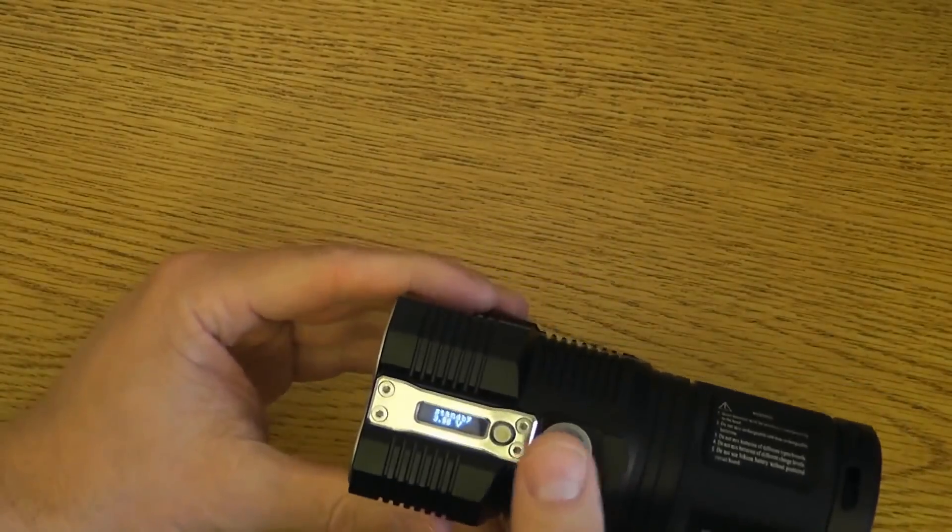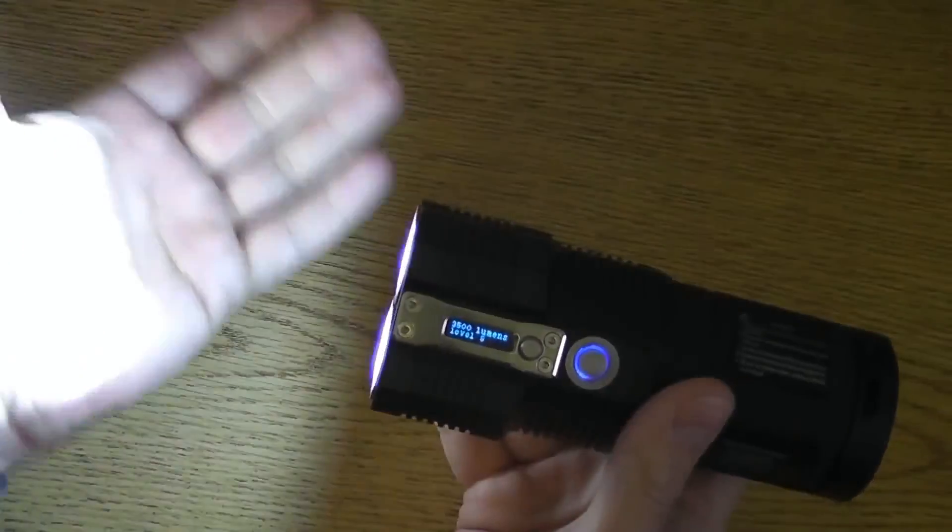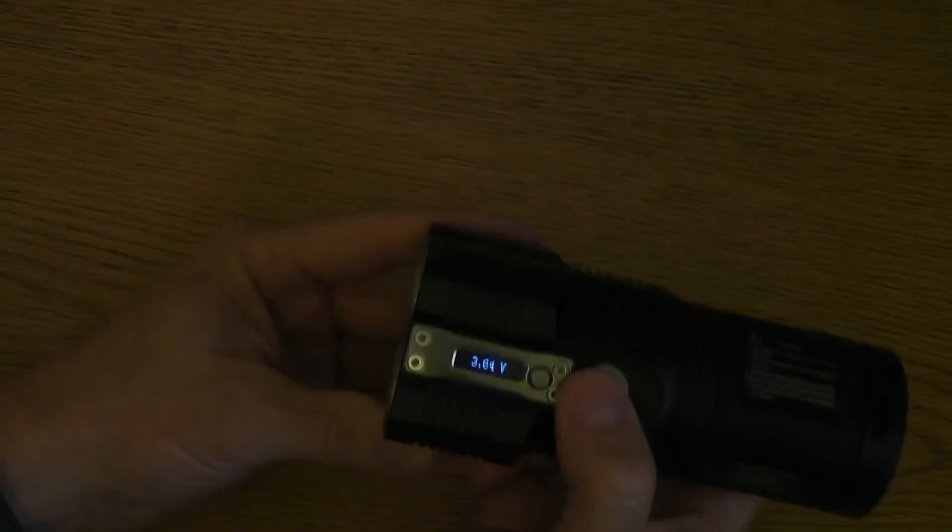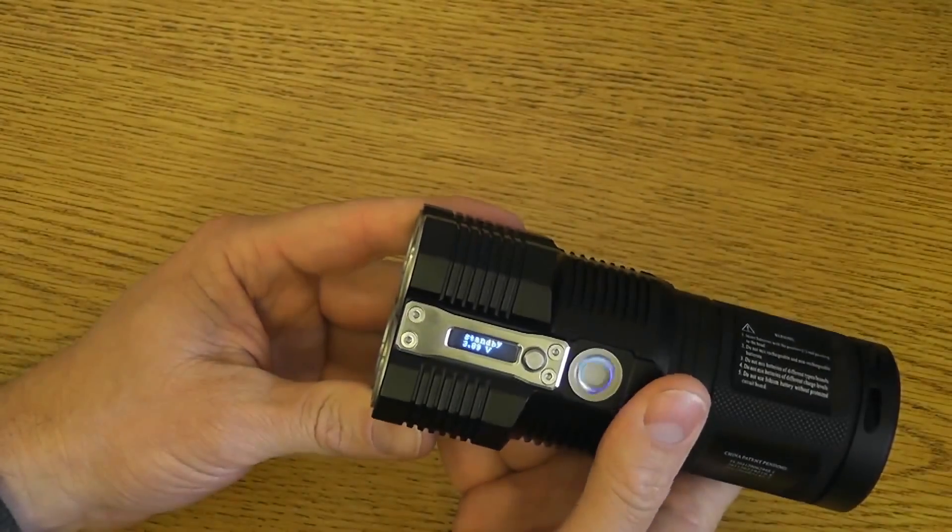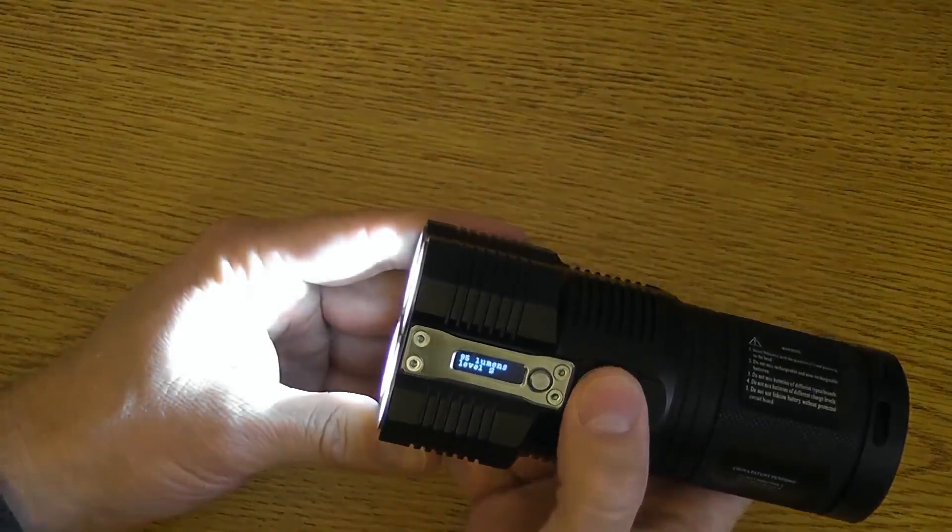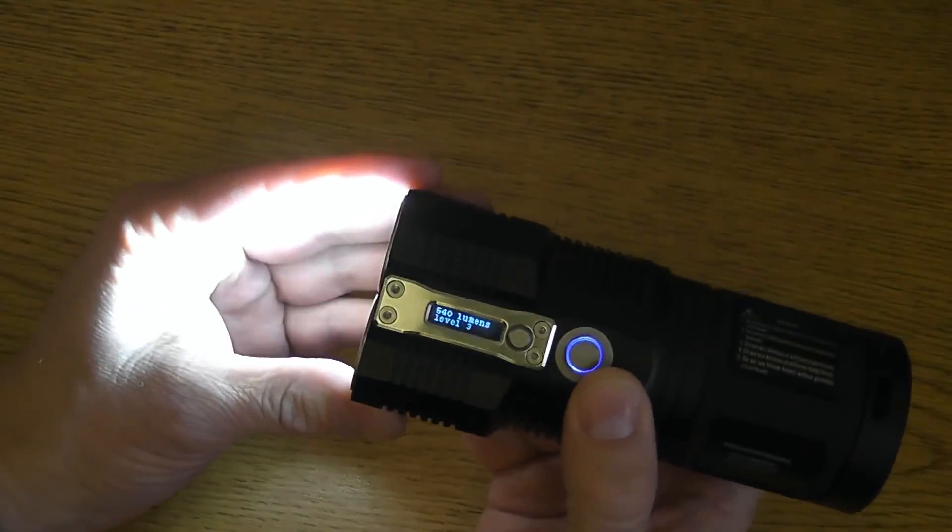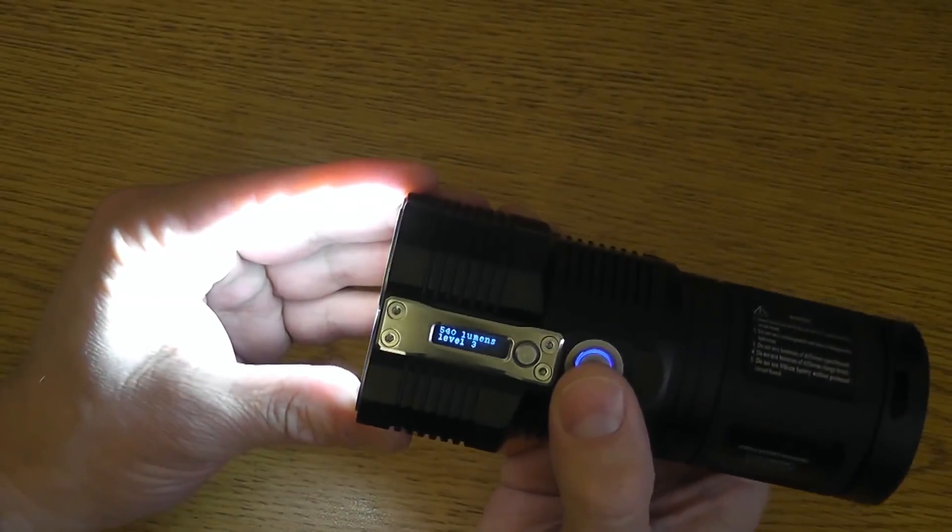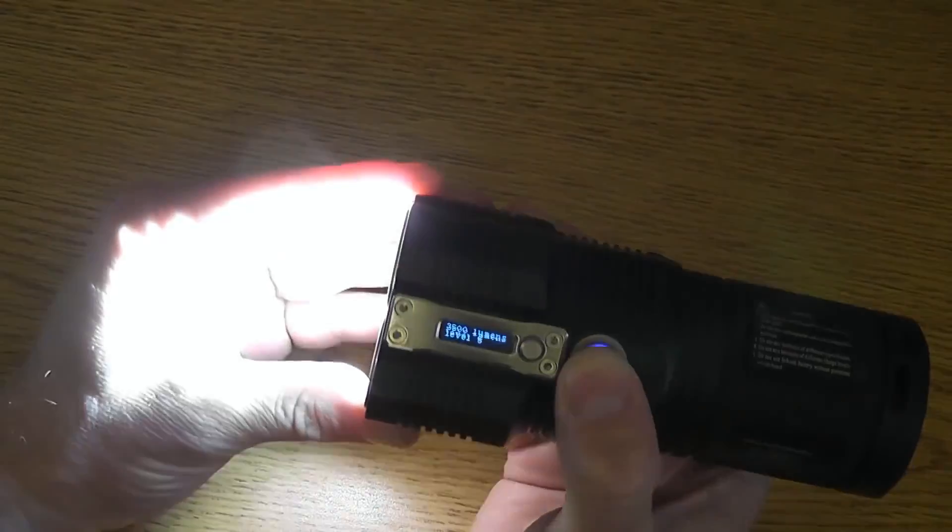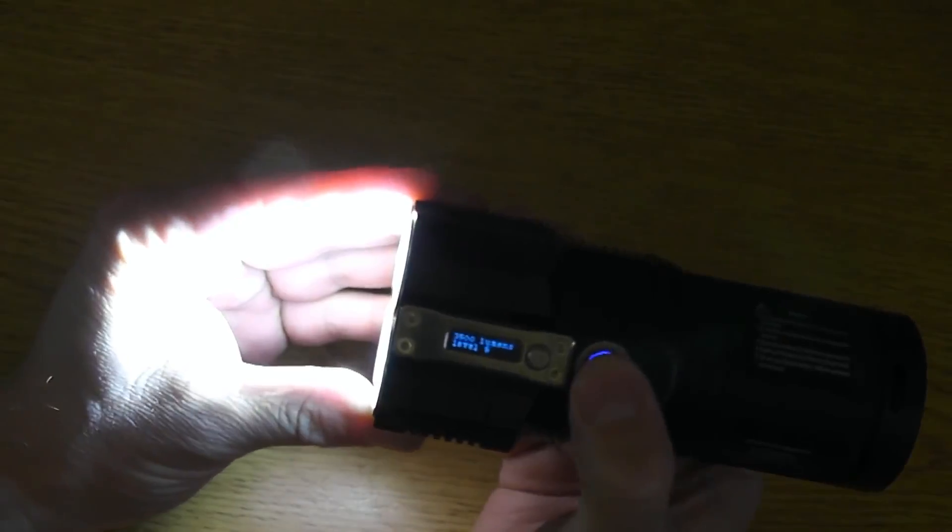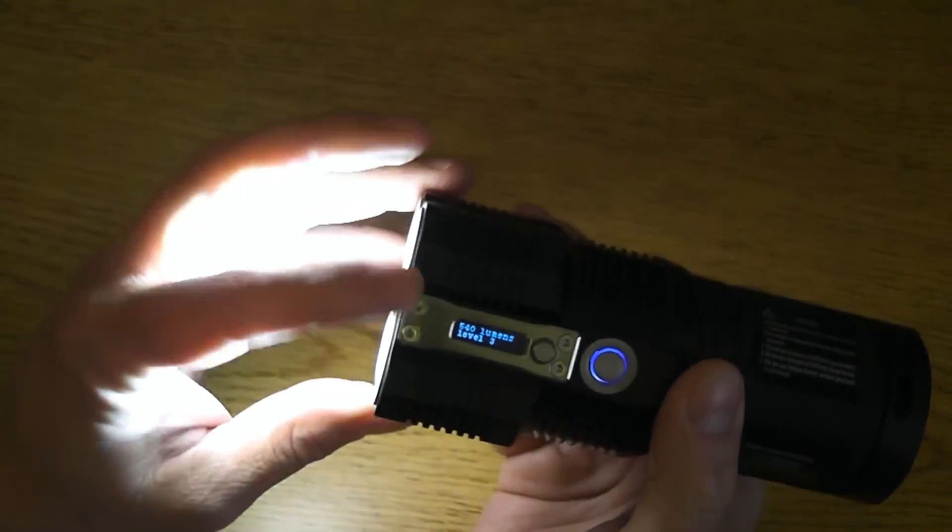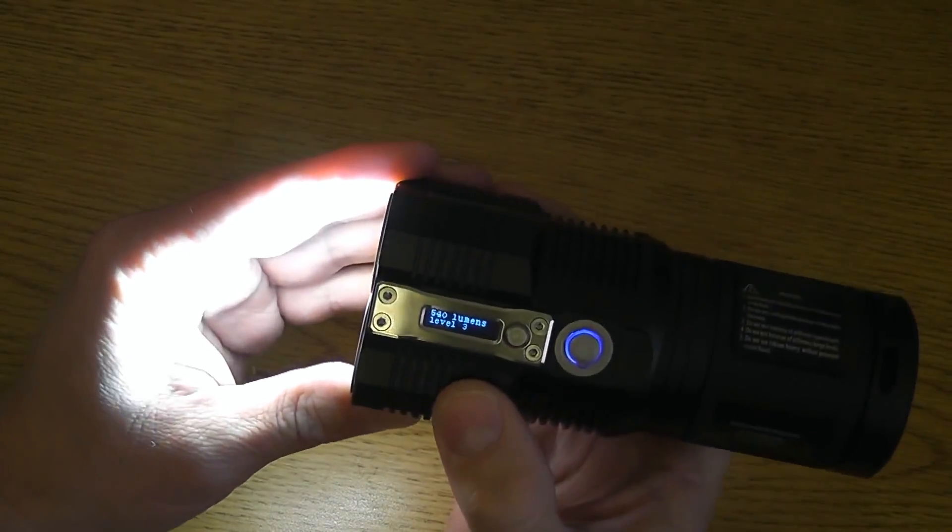So those are the daily modes. In order to go to turbo mode, just press the button all the way, there's turbo mode, 3500 lumens. Press it again, it shuts off. From any of the daily modes, in this case we're at level three or 540 lumens. From any of these modes, I can half press and hold to get to turbo mode. If I half press and hold again, it's going to return to the previous level, in this case, level three.